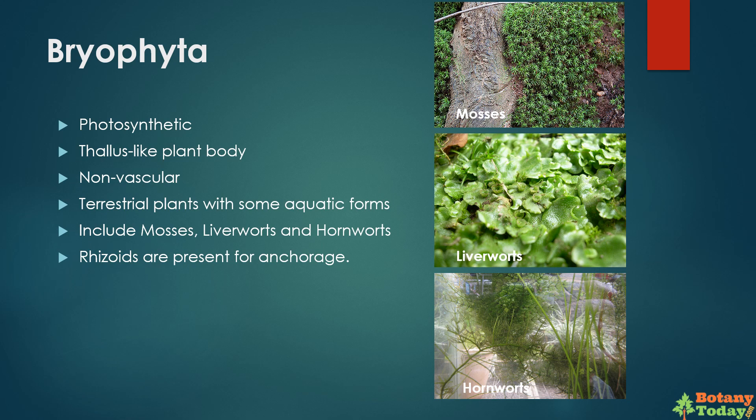What are bryophytes? Bryophytes are photosynthetic, undifferentiated mass of plant body. These are non-vascular, terrestrial plants with some aquatic forms, thus also known as amphibians of the plant kingdom. These include mosses, liverworts, and hornworts. They have rhizoids for anchorage.